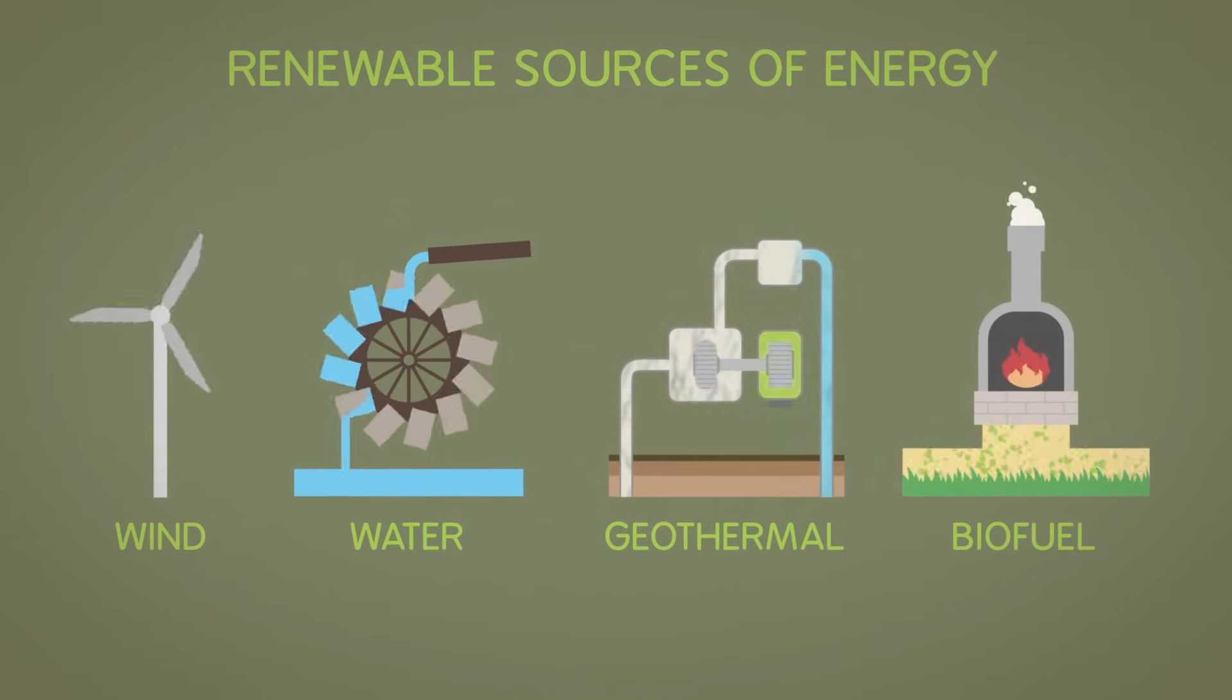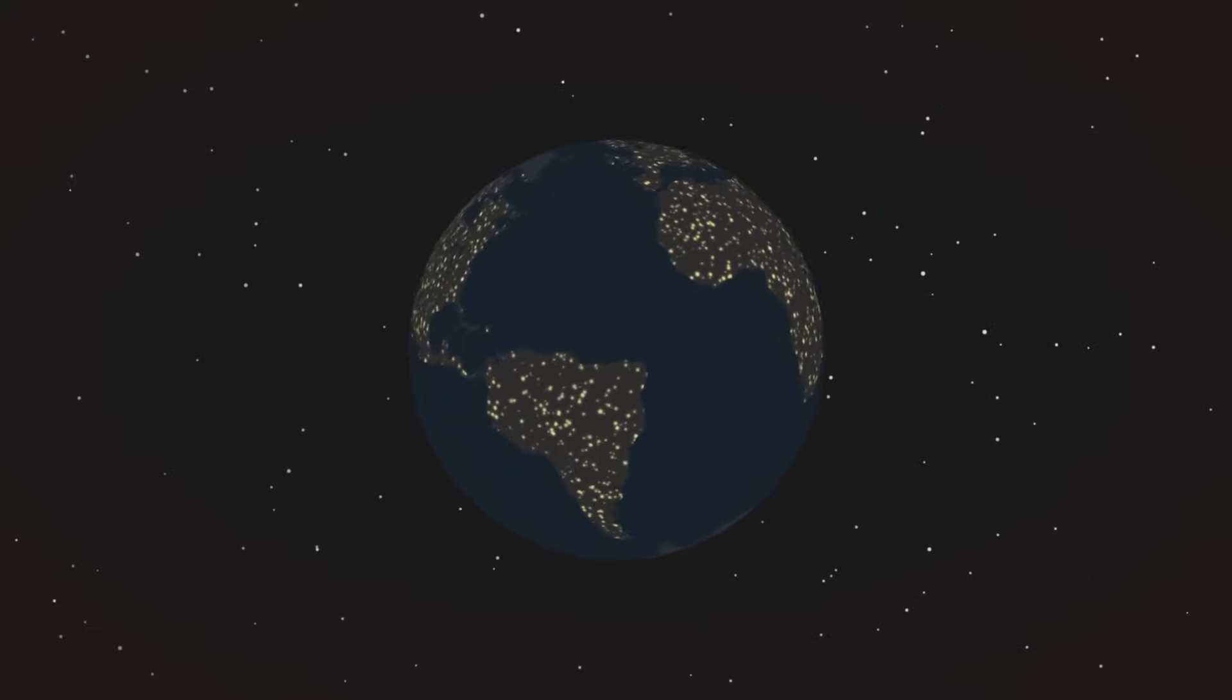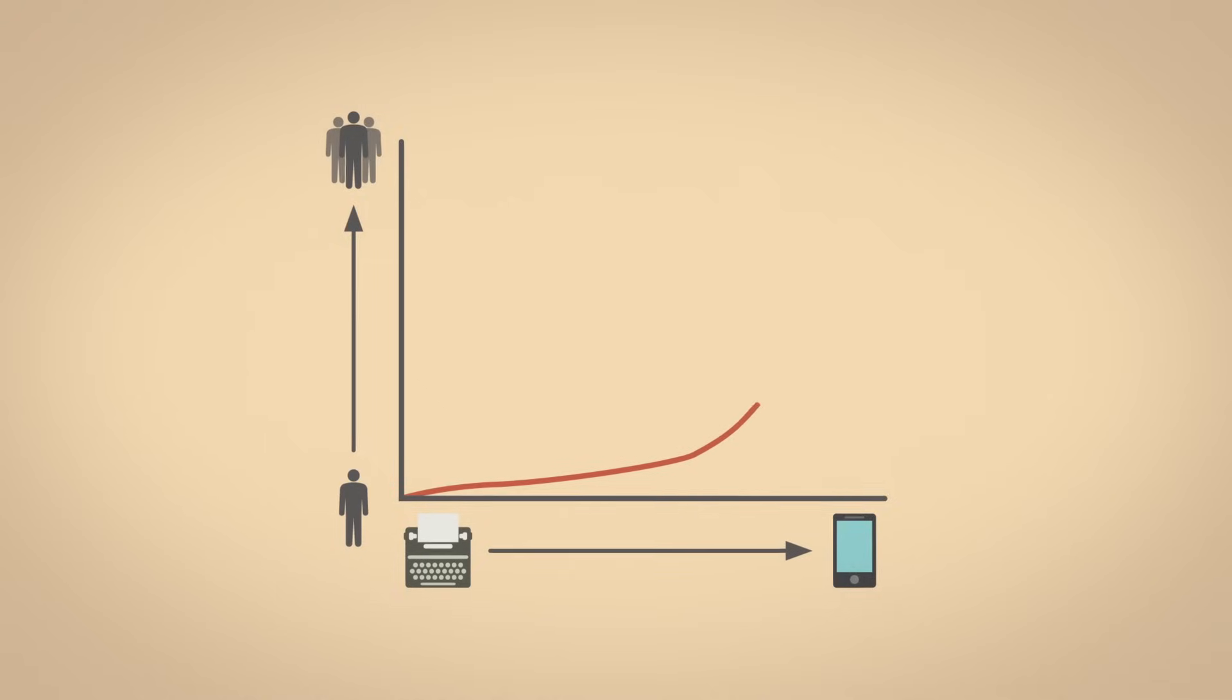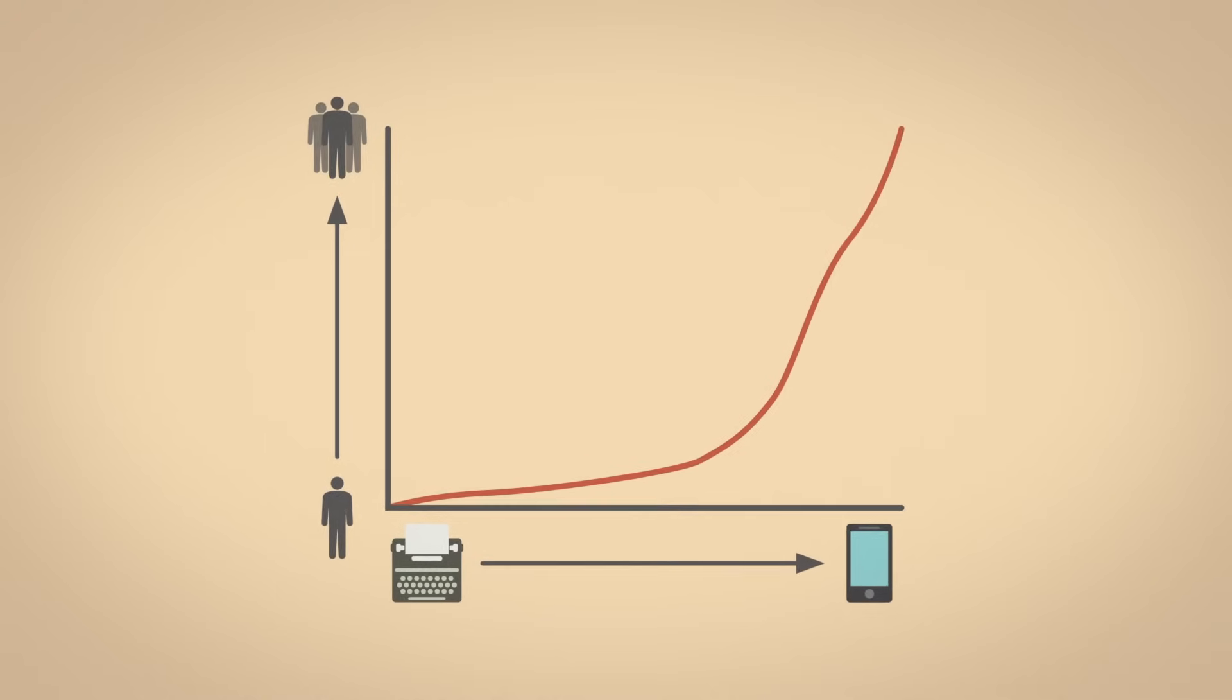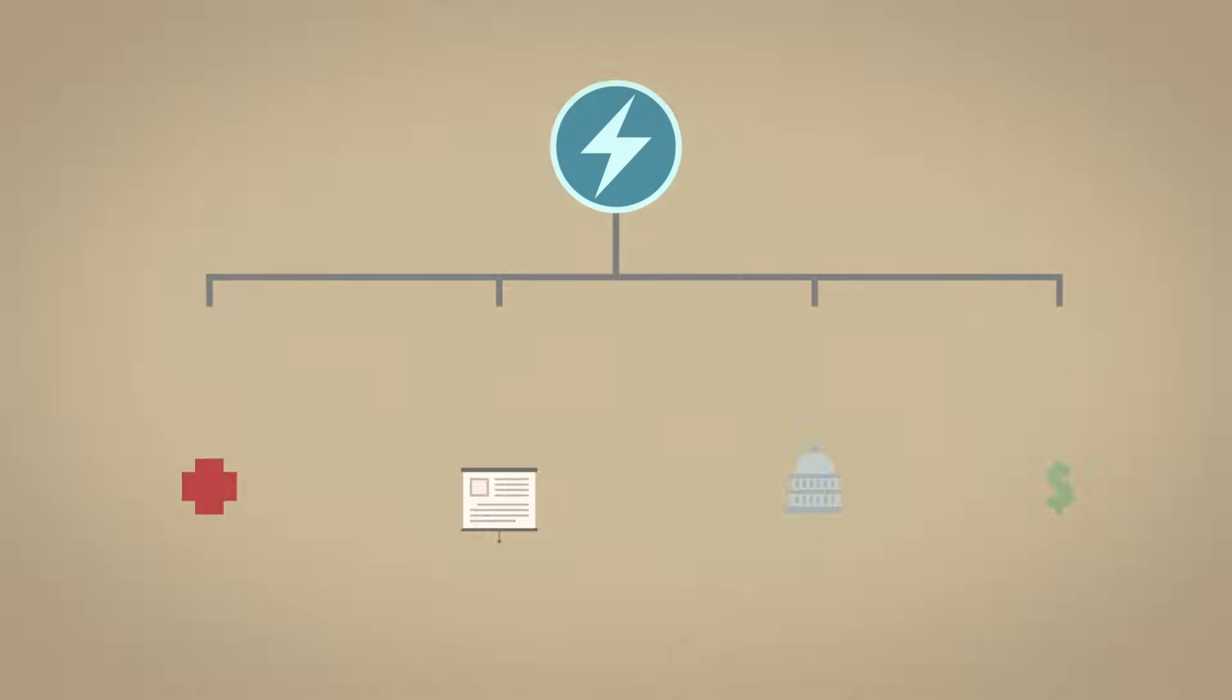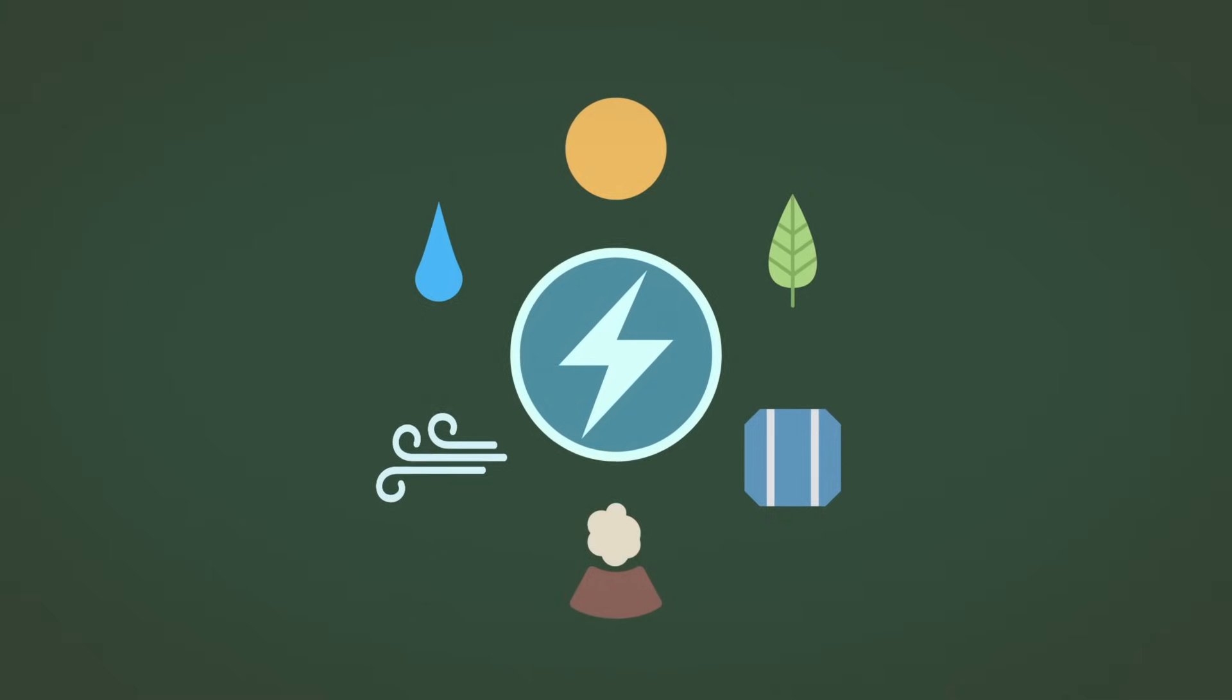Global demand for energy is increasing, but the planet has limited energy resources to access through a complex energy infrastructure. As populations rise alongside rates of industrialization and development, our energy decisions grow more and more important. Access to energy impacts health, education, political power, and socioeconomic status. If we improve our energy efficiency, we can use our natural resources more responsibly and improve quality of life for everyone.